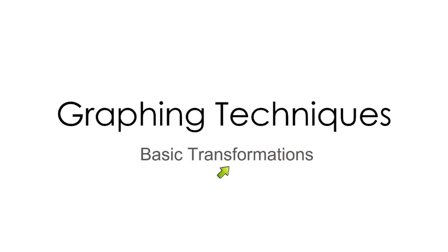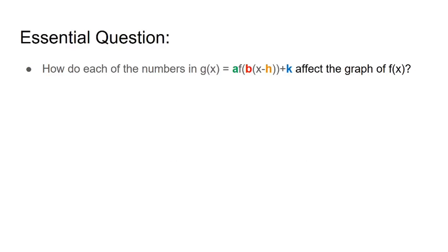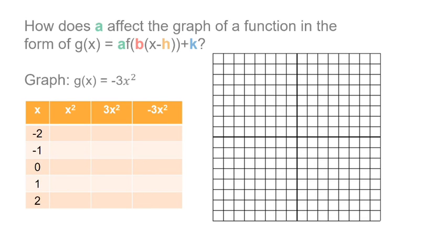In this video we're going to look at basic transformations. We're going to take regular graphs of parent functions and change numbers in them. We're going to put a number out in front and see how that affects it. I'm going to put numbers in different positions and we're going to see how each of these numbers affects the graph.